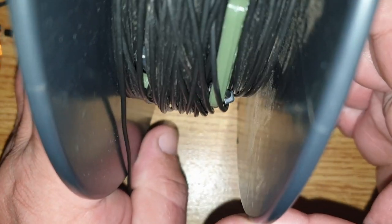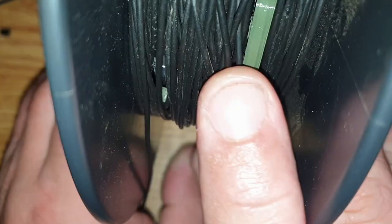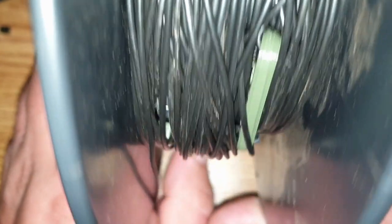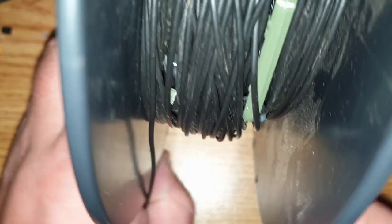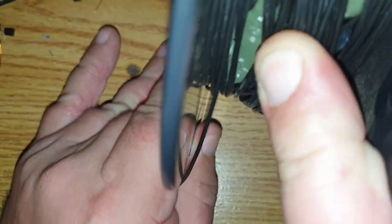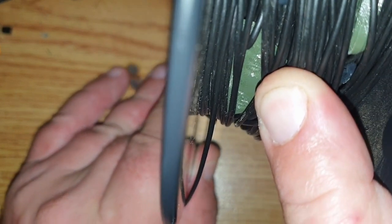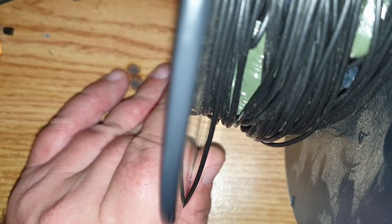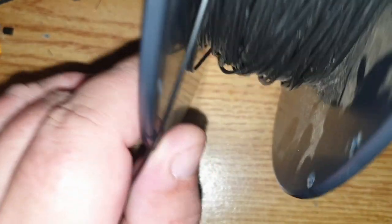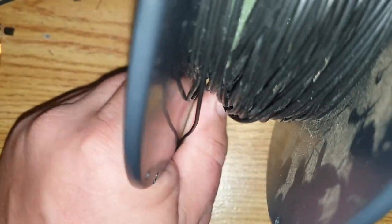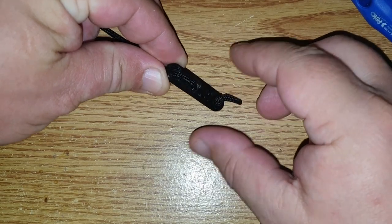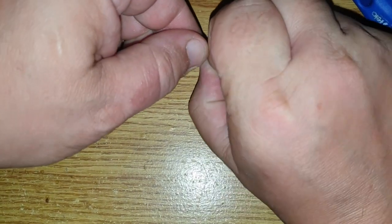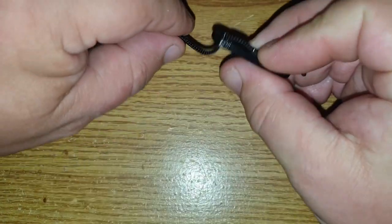And then we need the 3D printed stuff. Here you can see the connection, the 80-60 connection. And somewhere here, here you can see it is the triangle where we connect, where we put it up. I have that on a remained filament spool. And this is my insulator.